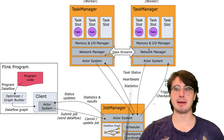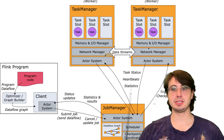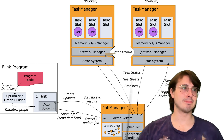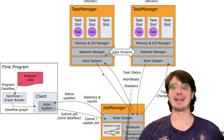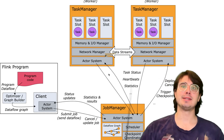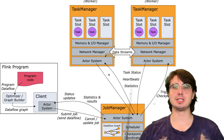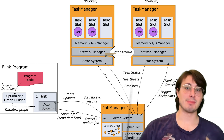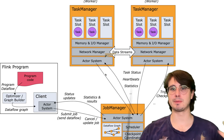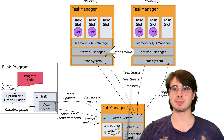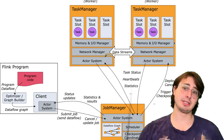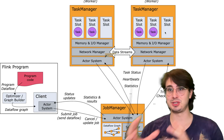Task manager memory is divided into several regions that each serve specific purposes. There's framework heap memory, which handles Flink's internal data structures, while task heap memory is allocated for user code execution. Managed memory serves batch operations and state backends like RocksDB, and network buffers facilitate data exchange between tasks. Parallelism will also significantly impact both performance and resource utilization.